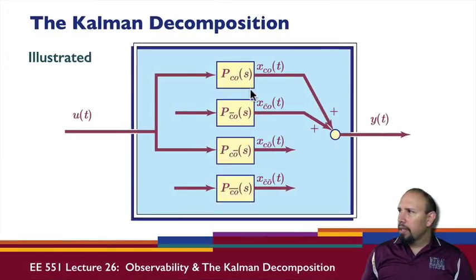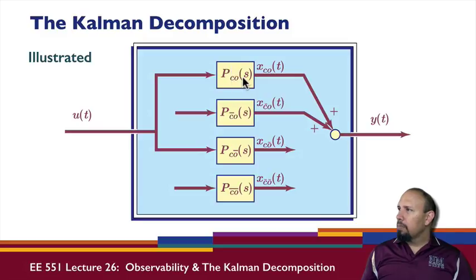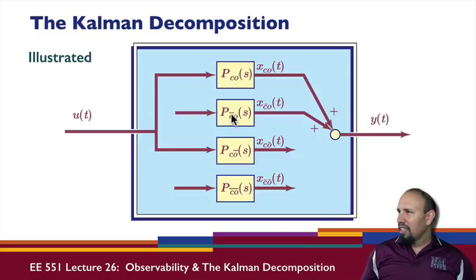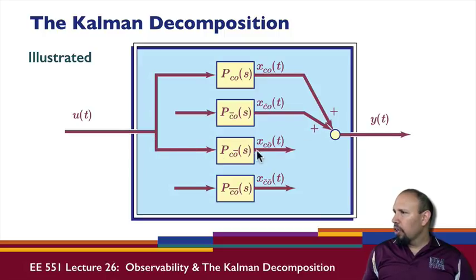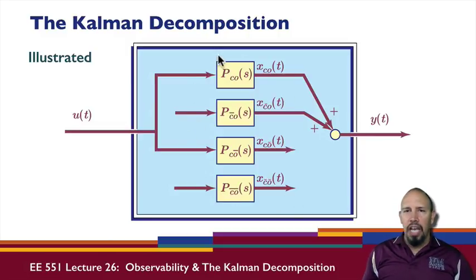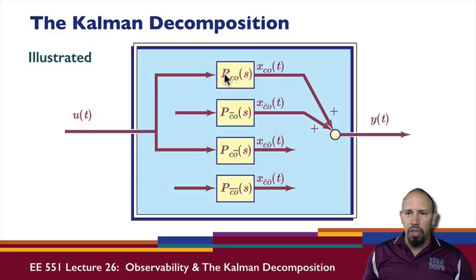We can illustrate this with a block diagram. Inside the system, the controllable-observable part receives the control signal and its output is seen in the overall output. The not-controllable part doesn't receive the input, but it is observable because its output goes to the overall output. The controllable but not-observable part gets the input but its output doesn't reach the overall output. The neither controllable nor observable part is isolated from both. A system can have all four of these parts, or it might be completely controllable and observable.